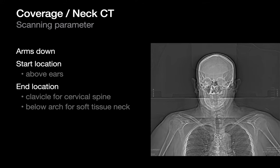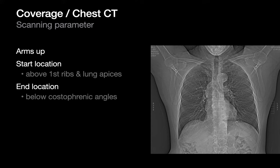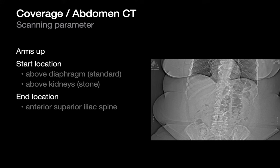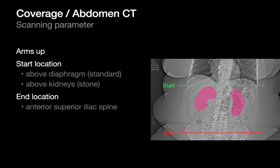For neck CTs, the arms are also lowered. A cervical spine CT scans from the tips of the ears to the heads of the clavicles, while a soft tissue neck CT scans from the tips of the ears to just below the aortic arch. For chest CTs, the arms are raised and scanning goes from just above the heads of the first ribs and lung apices to just below the lateral costophrenic angles. For abdominal-only CTs, the arms are raised; a standard abdominal CT scans from above the domes of the diaphragm to the anterior superior iliac spines (ASIS), while a renal stone protocol scans from above the upper poles of the kidneys to the ASIS.